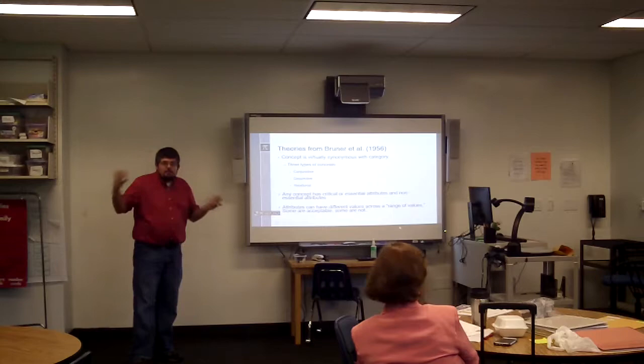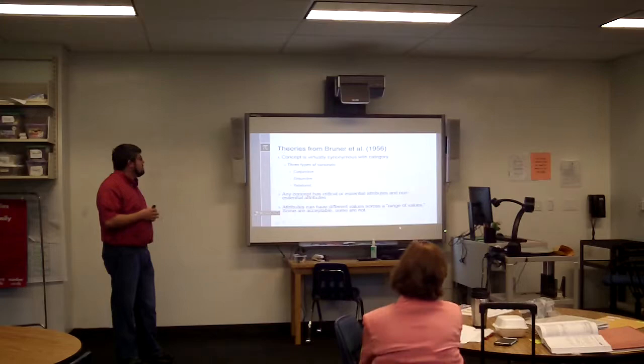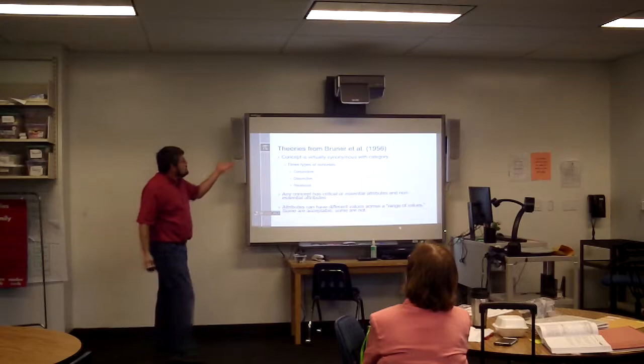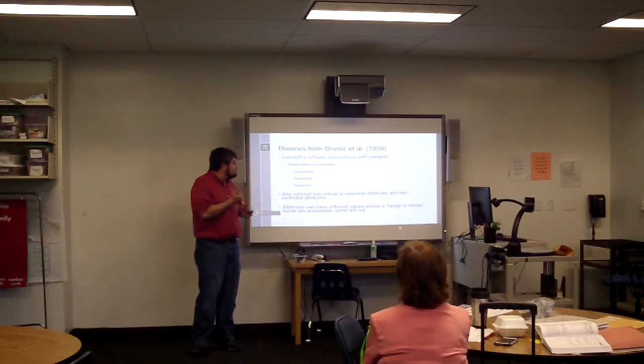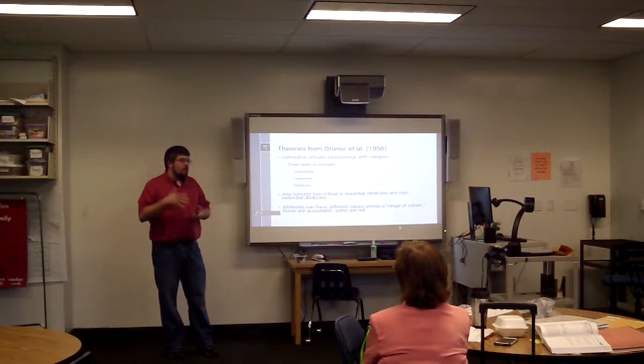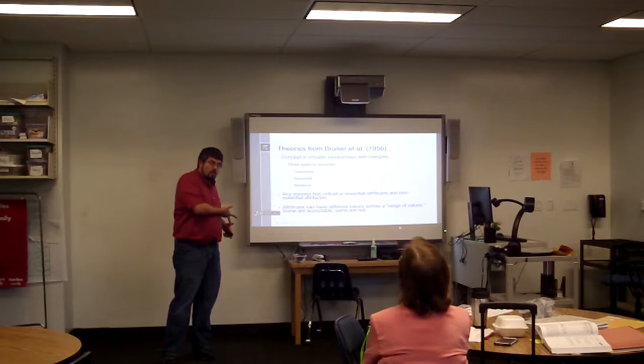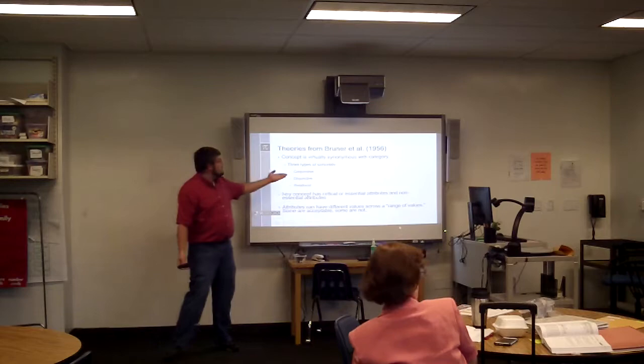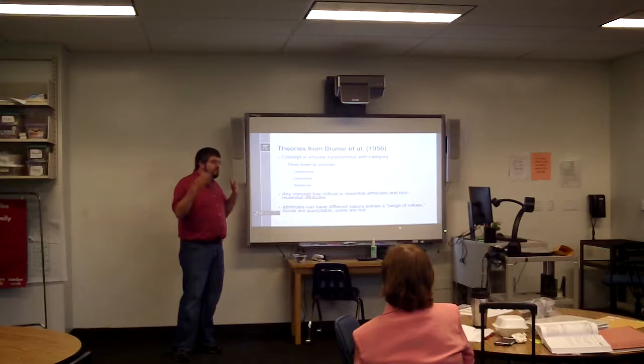Here's some background information about Bruner and the theories he had. In the book, he defines concept almost synonymously with category. He had three different types of concepts. One type is conjunctive, which means 'and.' For example, we talked about quadrilaterals and what convexity was, and then how figures can be convex and quadrilaterals — so that would be a conjunctive concept.